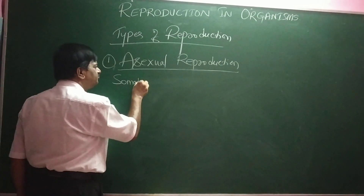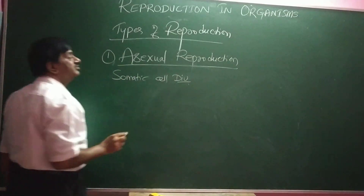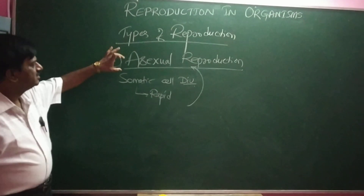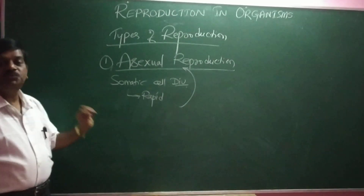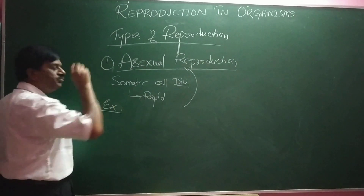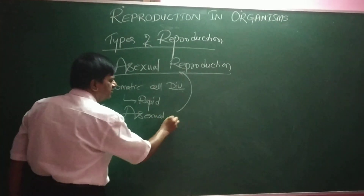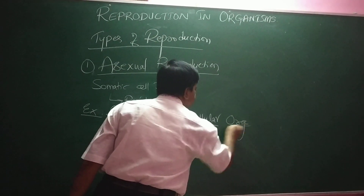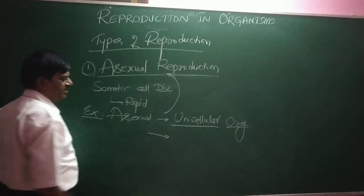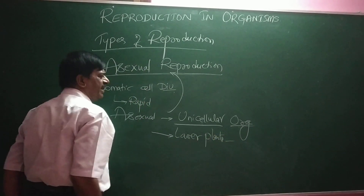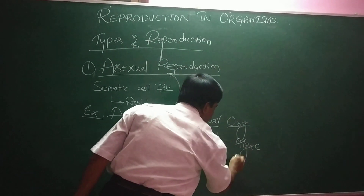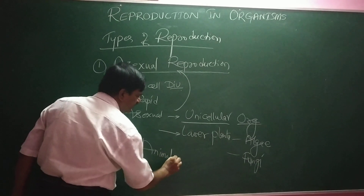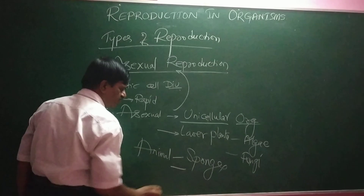The somatic cell divisions are always rapid in asexual reproduction. Asexual reproduction always takes place in unicellular organisms and also in lower plants such as algae and fungi, and in some animals like sponges and hydra.